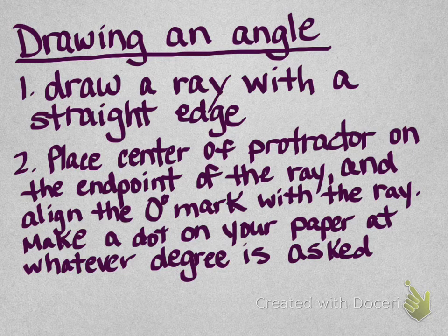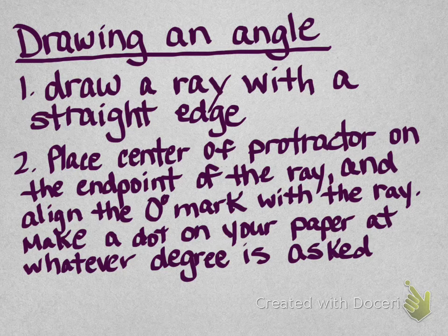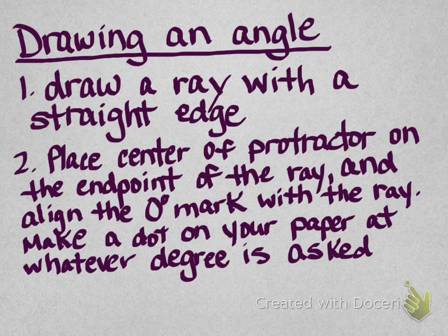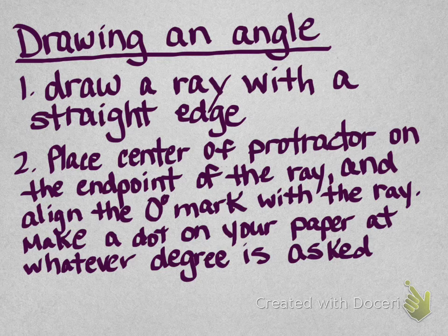You're going to be given problems where they're going to ask you to draw an angle that measures 30 degrees, or draw an angle that measures 60 degrees. So you'll draw your straight, take your straight edge and draw your ray, and then you'll use your protractor to find whatever degree that they ask you to draw to. Put a dot at that particular point, and then take a straight edge and connect your, what's going to be your vertex to that point, and then form your angle that way.